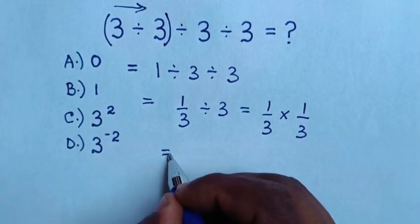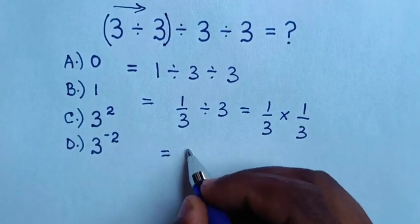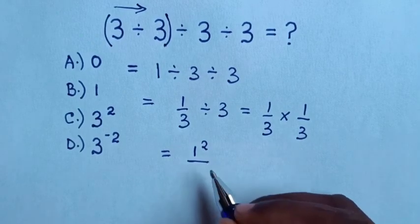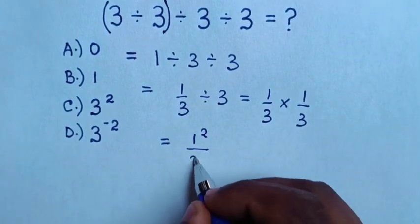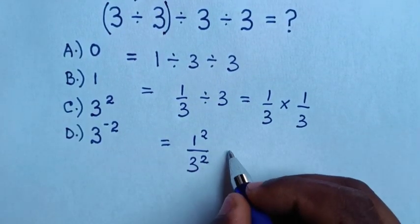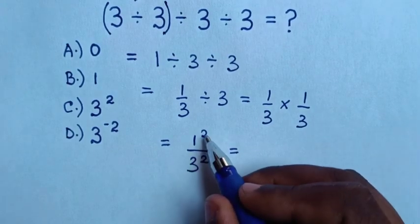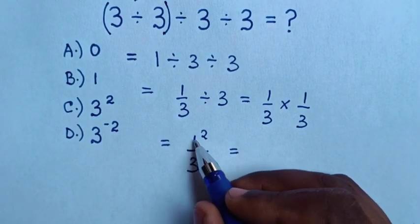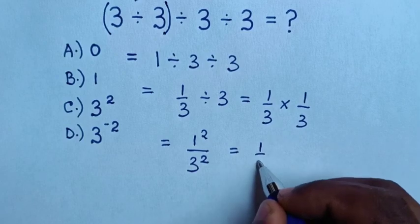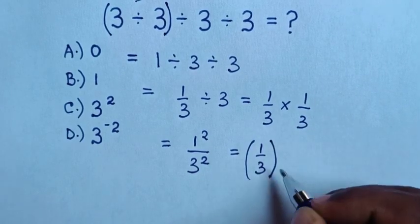Then it will be equal to 1 times 1 is 1 square over 3 times 3 is 3 square. Then it will be equal to, in here square is common, so it will be 1 over 3, bracket, square.